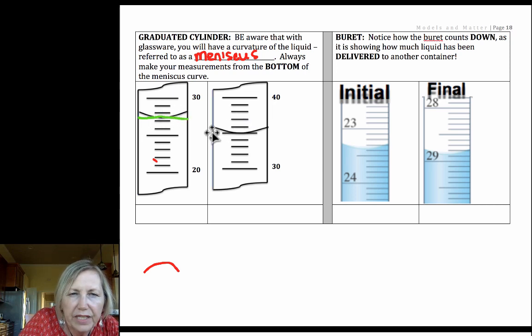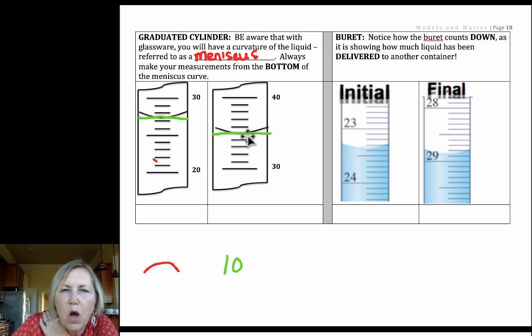So in both of these, we're going to read it at the bottom of the meniscus. Let's first define our lines. This is 30 and that's 40, so we know we've got the tens place covered. Each of the small divisions is the ones place. So that means we always estimate one more digit than what is defined. So we're going to go to the tenths place here.